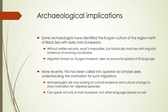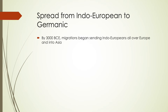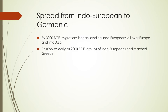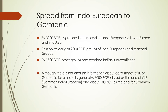By around 3000 BCE, migrations began sending Indo-Europeans from their origins throughout Europe and into Asia. Possibly as early as 2000 BCE, groups reached Greece, suggesting Greek and Hellenic languages split off sooner than others. By about 1500 BCE, other groups would have reached the Indian subcontinent. The timeframe of around 3000 BCE is listed as the end of common Indo-European, and about 100 BCE is the timeframe for the end of common Germanic.